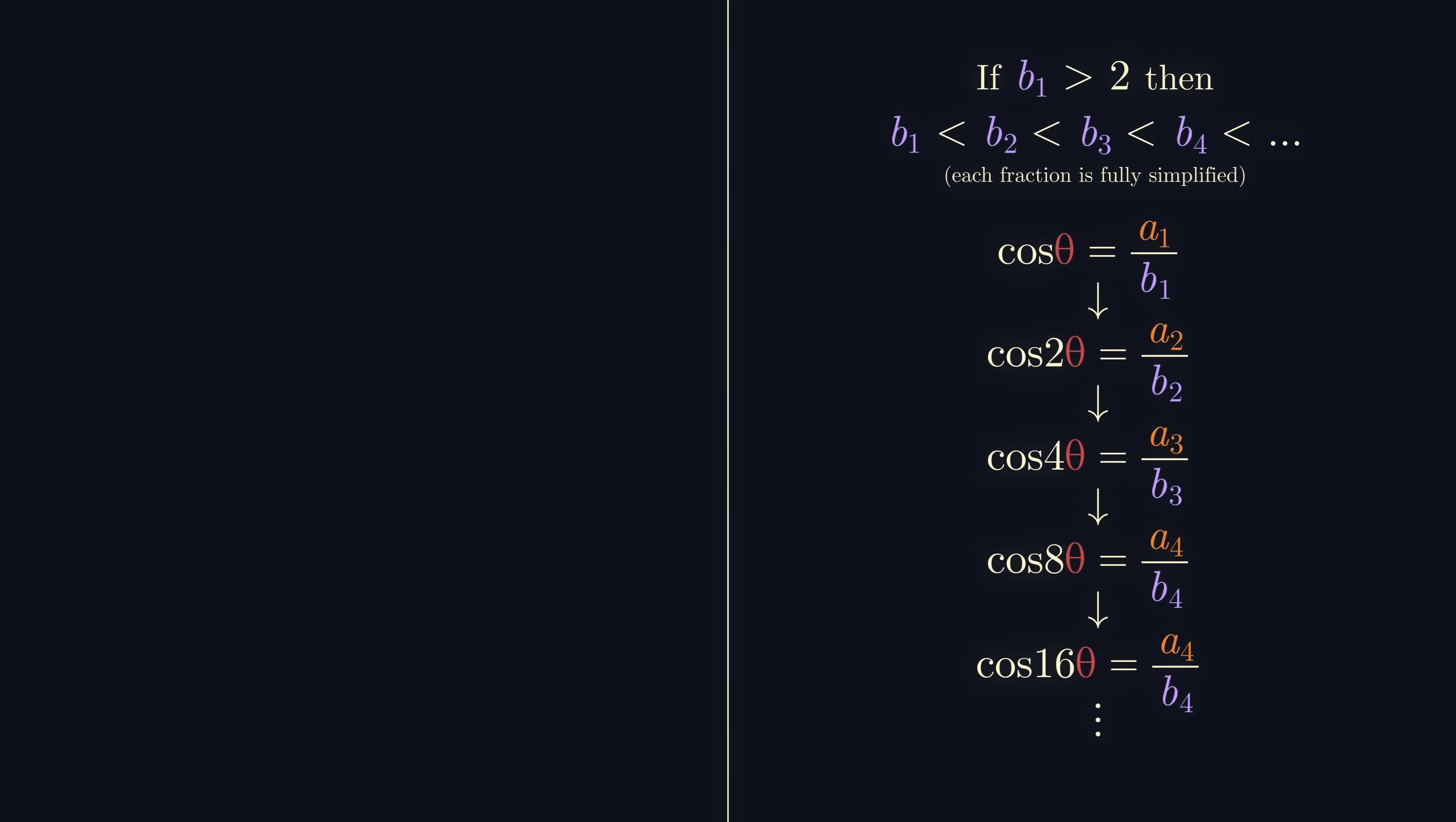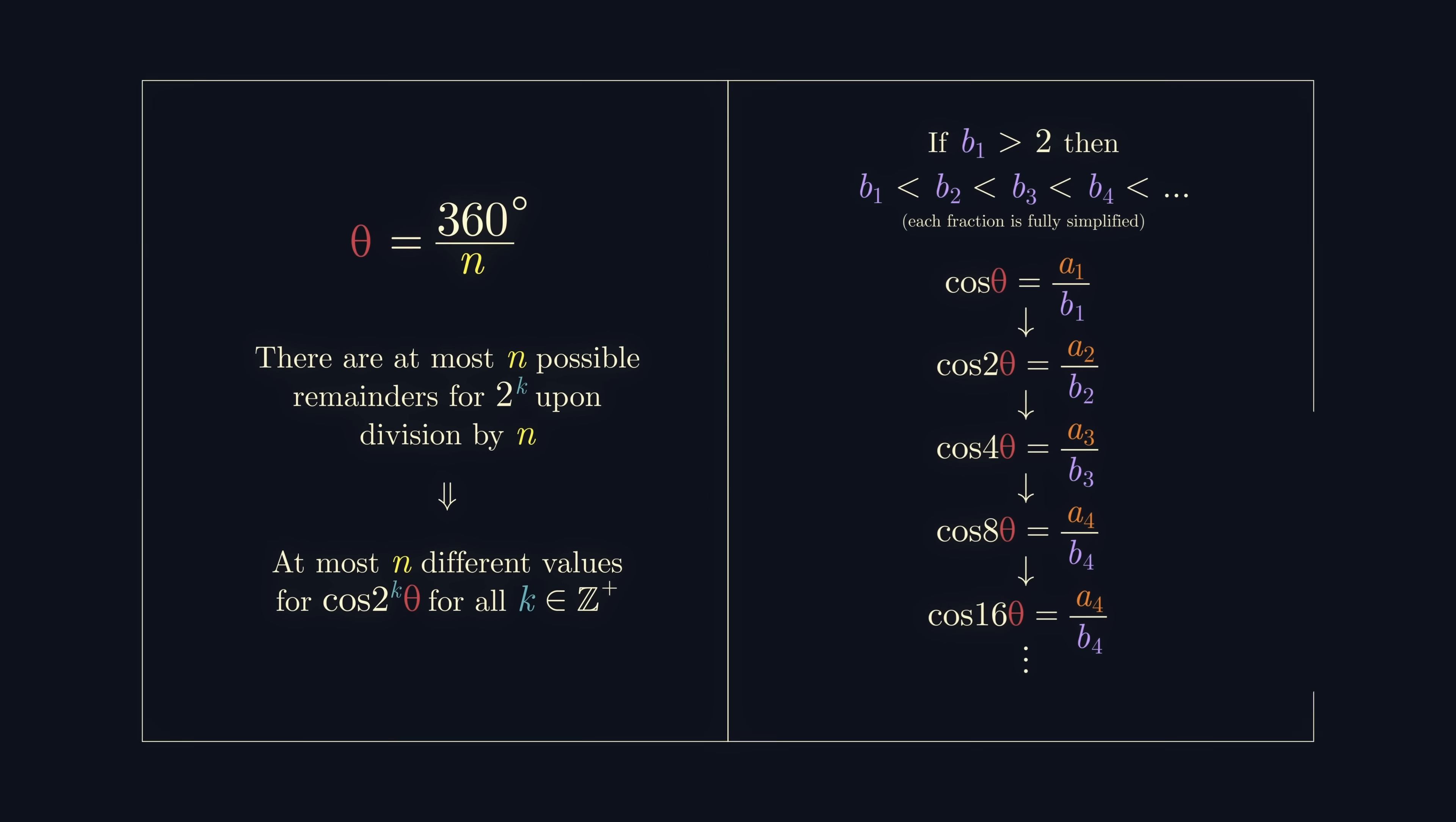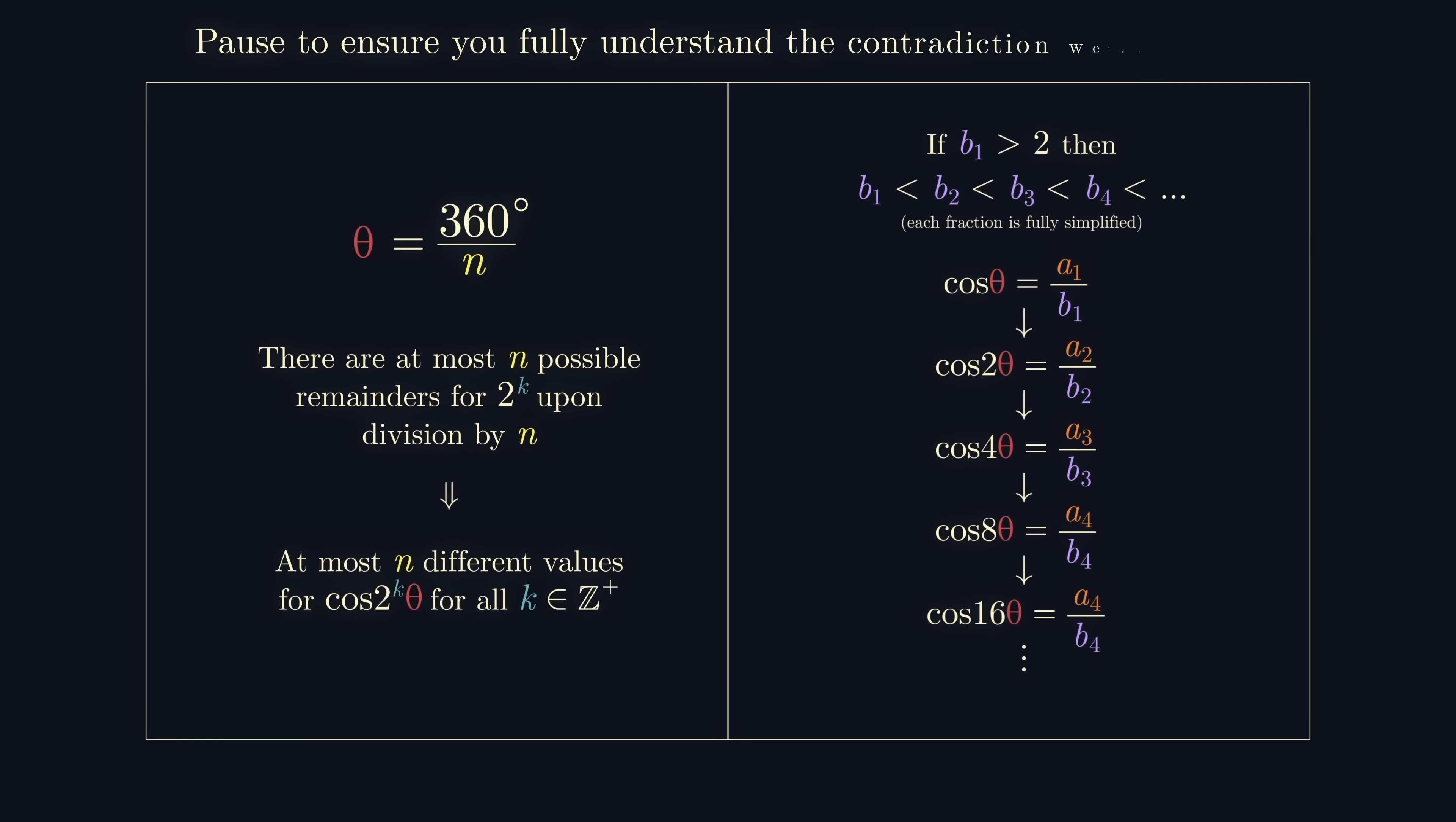More rigorously, because theta equals 360 over n, there are only at most n possible values for the value of cosine of 2 to the power of k times theta, as k varies. And there we have it, a contradiction. We have a sequence which must both contain infinitely many different terms, but also be periodic with a period of at most n, and that makes no sense.